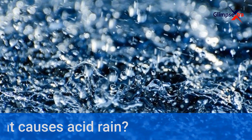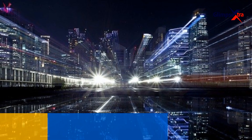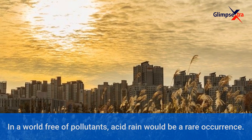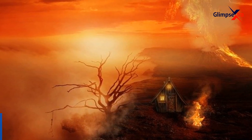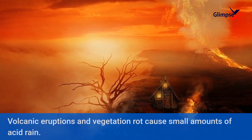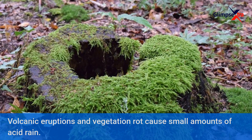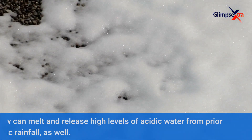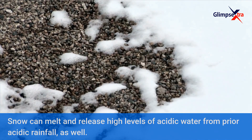What causes acid rain? In a world free of pollutants, acid rain would be a rare occurrence. Volcanic eruptions and vegetation rot cause small amounts of acid rain. Snow can melt and release high levels of acidic water from prior acidic rainfall.